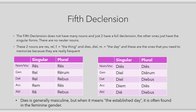Let's talk now about the fifth declension, which is nothing particularly hard, so you will not have any problems memorizing it. The fifth declension does not have many nouns, and just two nouns have a full declension — singular and plural complete — while the others, such as 'spes, spei' (hope) or 'species, speciei' (figure, form), just have the singular and no plural. Another nice thing is that there are no neuter nouns, so you only need to learn one set of endings.